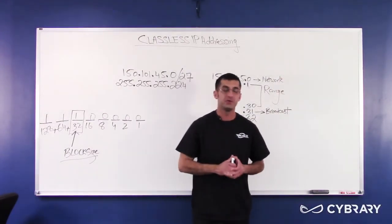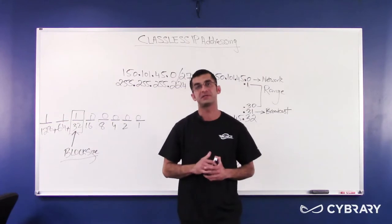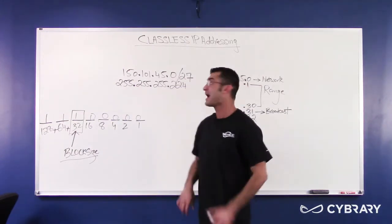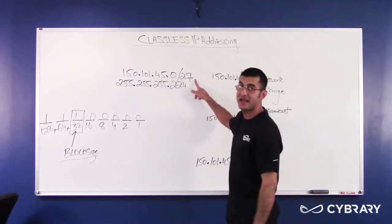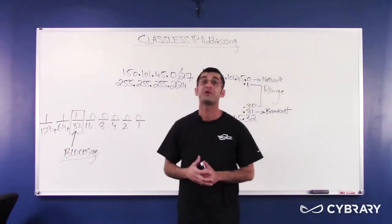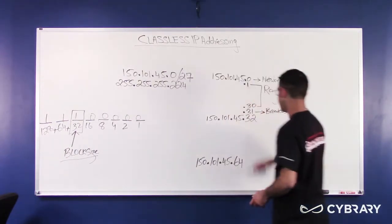What I'm looking for from you, if I ask you to go buy 30 addresses, is an IP address with a slash 27 mask, or a 255, 255, 255, 224 mask.